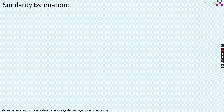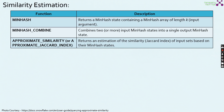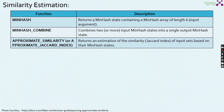Now we are going to discuss about the similarity estimation functions which are currently available. There are three different functions for similarity estimation. One is minhash, which returns a minhash state combining a minhash array of length K. Minhash combine will combine two or more minhash states into a single output minhash state. Finally, approximate similarity (or approximate Jaccard index) returns an estimation of the similarity of the input sets based on their minhash states.